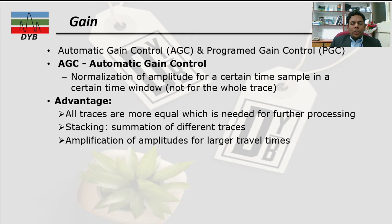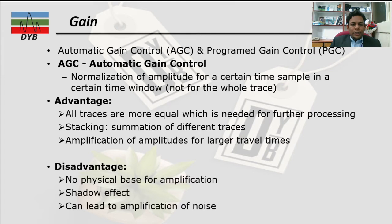For stacking, the summation of different traces can give better results with this gain. There is also amplification of amplitude for large travel times — for example, from five to six seconds, which is a large travel time at high depth. As for disadvantages, there is no physical basis for amplitude amplification. In the case of shadow effects, it cannot enhance the amplitude well, and it can lead to amplification of noise together with the signal.